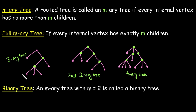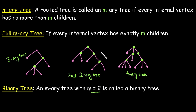Another important term is the binary tree. A binary tree is an m-ary tree where m is equal to 2, or we can say a full 2-ary tree is called the binary tree. So among these three cases, only the second figure represents a binary tree, where every internal vertex has exactly 2 children.